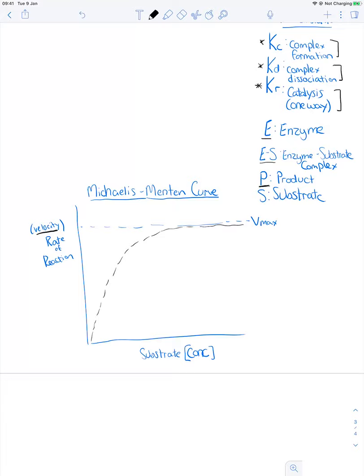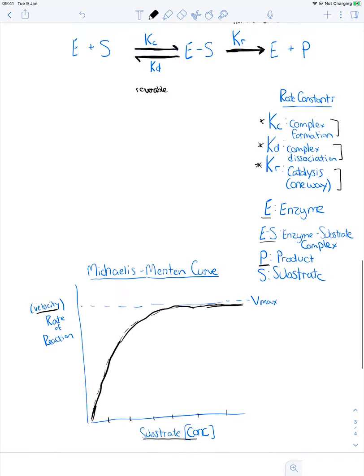And we call this a Michaelis-Menten curve. So you can make a plot of this and you can have substrate concentration down here. You could change that concentration and you kind of get this very familiar looking graph that goes up and then it becomes constant. And you guys should be able to explain why that happens.